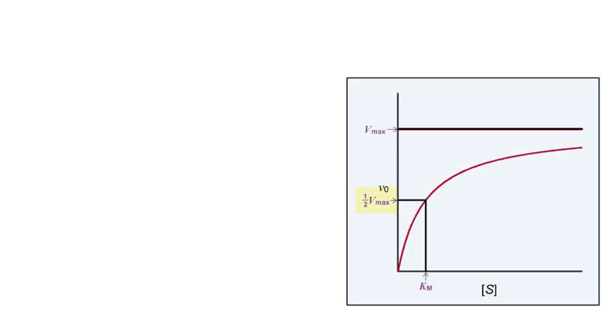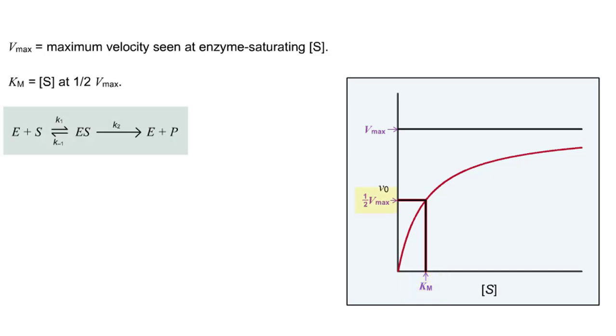Vmax is the maximal velocity that can be achieved by an enzyme under the special case of saturating substrate concentration. Km is a lumped rate constant, incorporating all the rate constants for ES and P formation, K1, K-1, and K2.